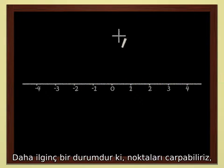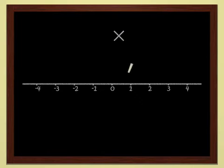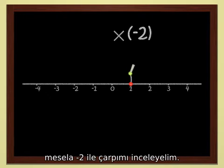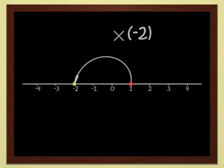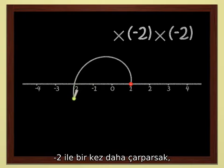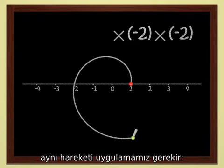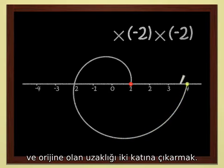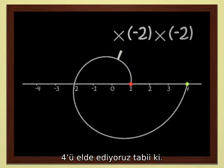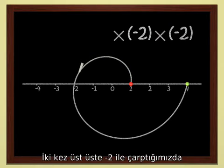More interesting still is multiplication of points. Let's look at multiplication by minus two, for instance. It transforms the point one into the point minus two, of course. And if you multiply again by minus two, you have to do the same thing. Change sides with respect to the origin and double the distance from the origin. You get four, of course. If we multiply twice by minus two, we have multiplied by four.